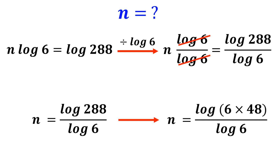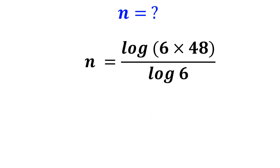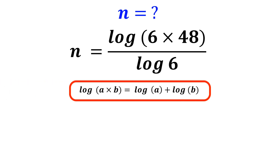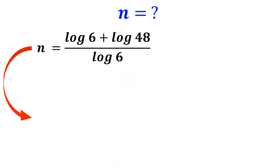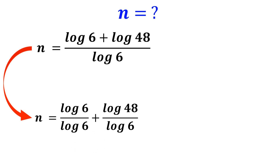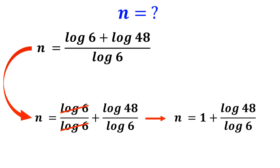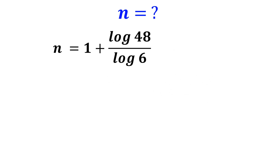We rewrite this equation as n equals log of (6 times 48) over log of 6. Based on logarithm rules, log of a times b equals log of a plus log of b. So we rewrite this as n equals (log of 6 plus log of 48) over log of 6, which simplifies to n equals log of 6 over log of 6 plus log of 48 over log of 6. The log of 6 terms cancel out, leaving n equals 1 plus log of 48 over log of 6.